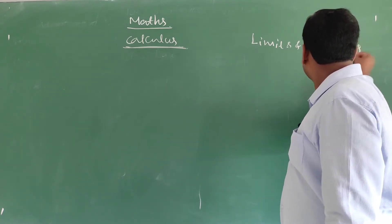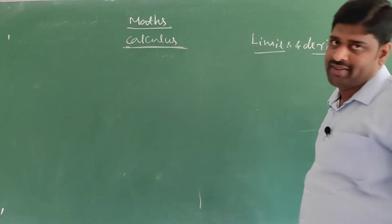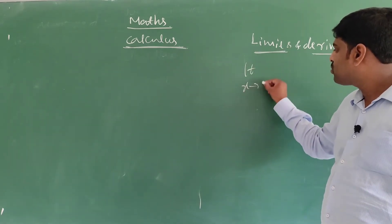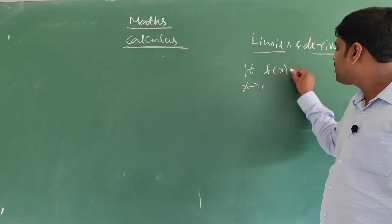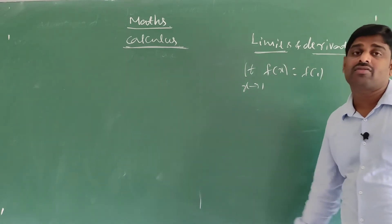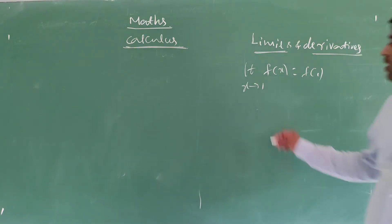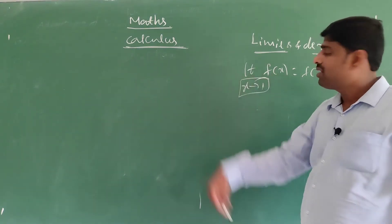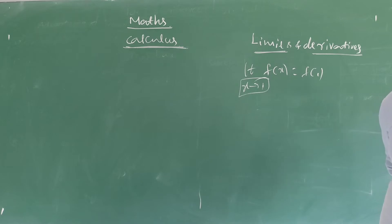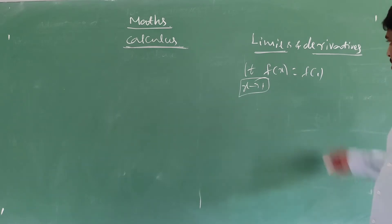What is meant by a limit? What is meant by a derivative? For example, limit x tends to 1, f of x is equal to f of 1 — this is called a limit. We have to define the range of this value, that is called limit. Derivative means the rate of change of y with respect to x.